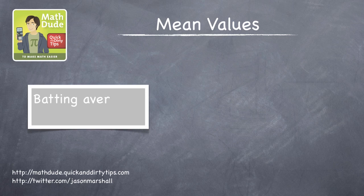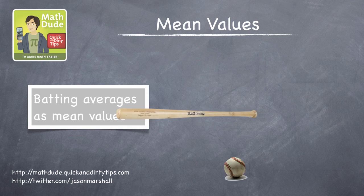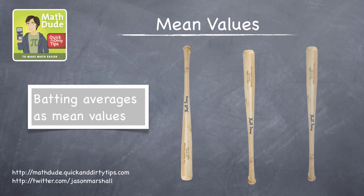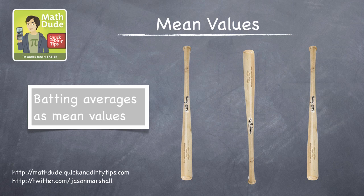In episode 21 of the podcast, we talked about batting averages in baseball as another example of mean values. But how exactly are batting averages mean values? Doesn't really seem like the same type of problem as adding potato chips, right? What do we add up? And then what do we divide by?